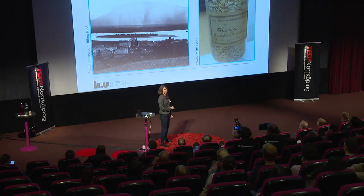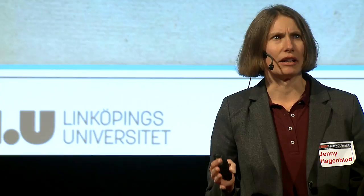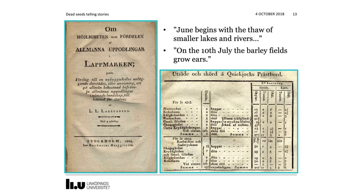We also know what it was like to do agriculture in this region from a thesis written in the early 19th century: June begins with the thaw of ice on lakes and rivers, and by the 10th of July the barley fields are already growing ears. Within about a month, the farmers in Kvickjok had sown their seeds, grown them, and the seeds had started to set ears. Despite this, they didn't do too poorly — at Nodstikjok they sowed two kappa, about nine liters of seed, and harvested two and a half själ, about 46 liters, giving a yield ratio of five.